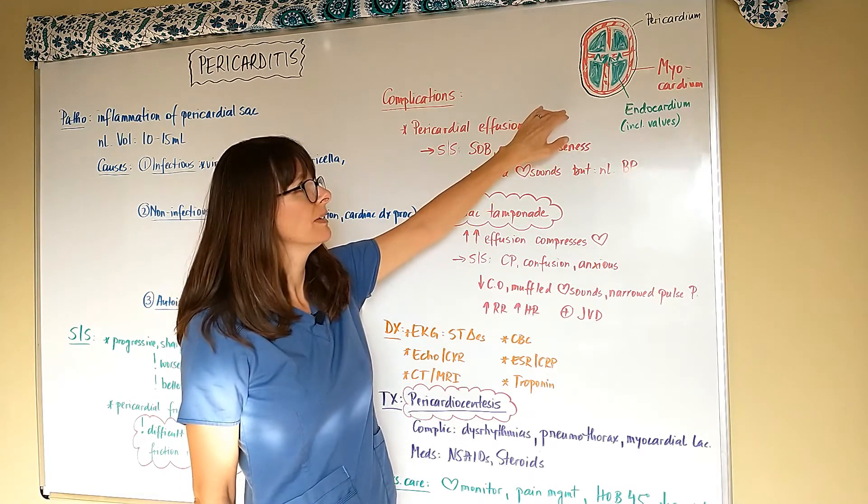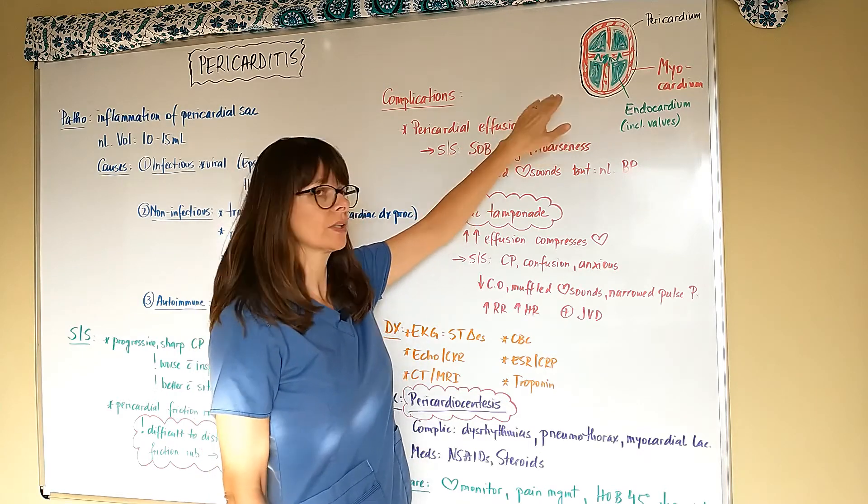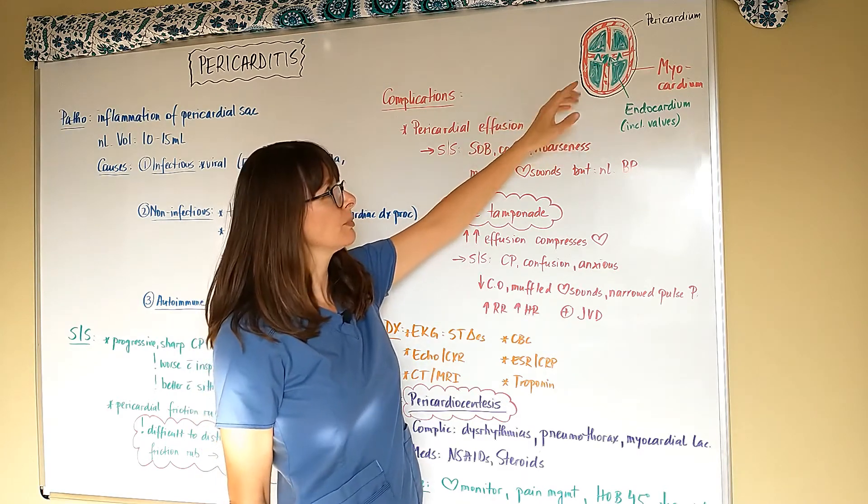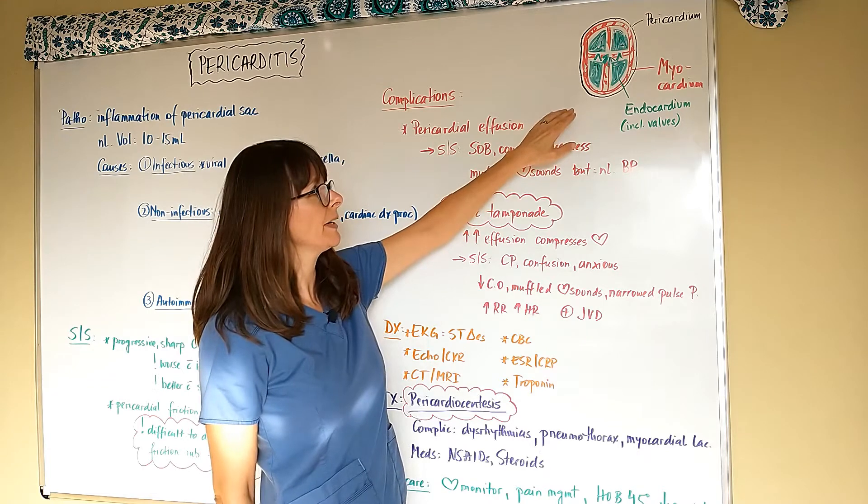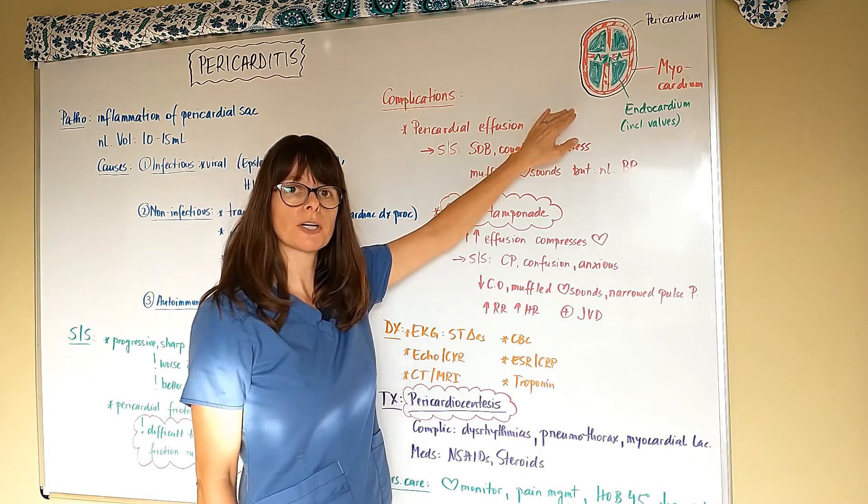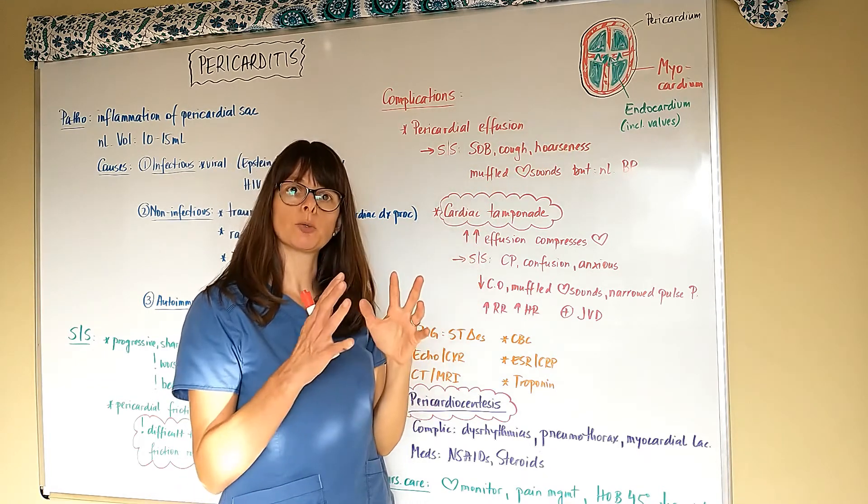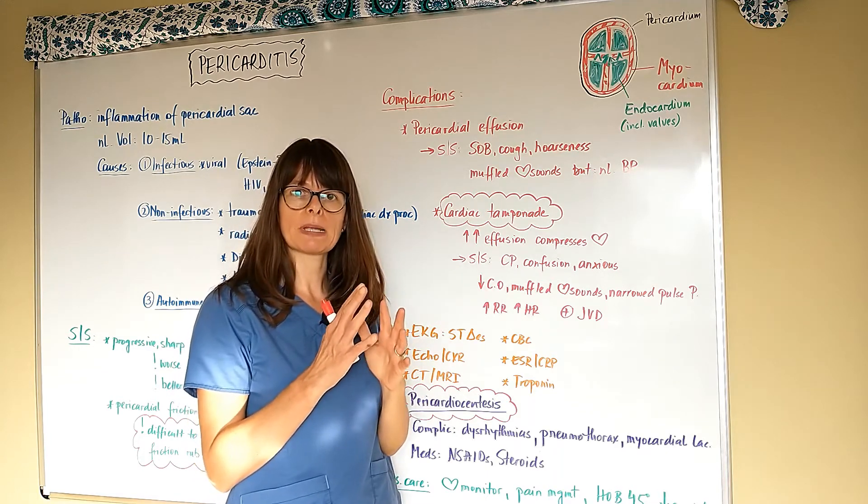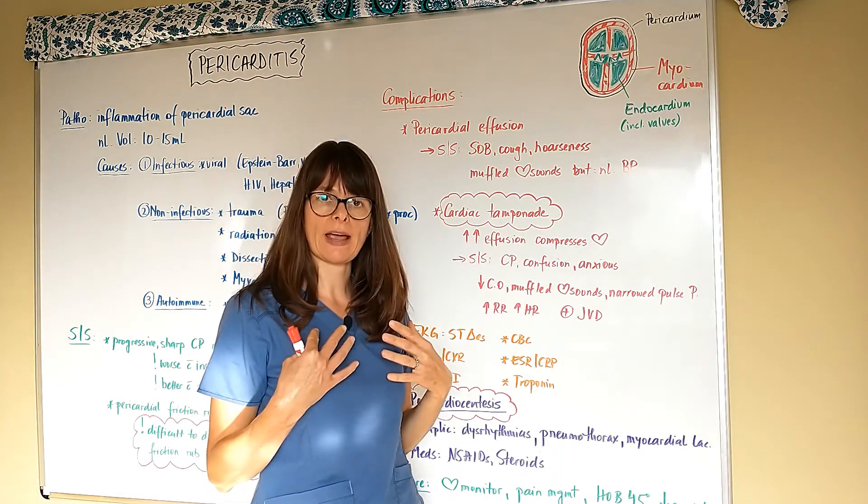And the pericardium is the outermost layer that surrounds the heart. In between the pericardium and the myocardium, there's pericardial fluid that provides lubrication so the two surfaces don't rub against each other, just as we have in the pleural cavity between the visceral and parietal pleura.